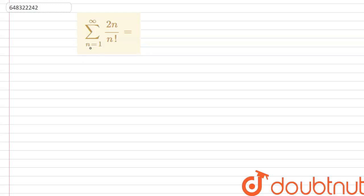We are given that the sum from n equals 1 to infinity of 2 into n divided by n factorial is equal to what? So we have the summation from n equals 1 to infinity of 2 into n divided by n factorial.